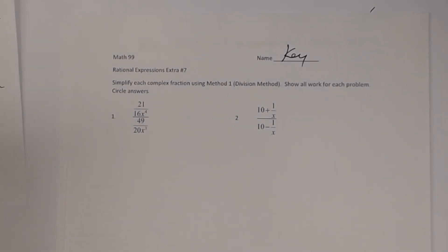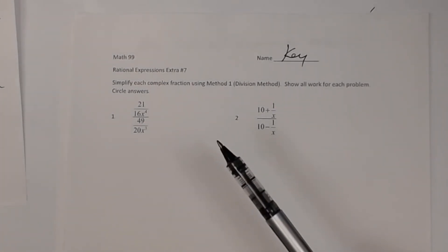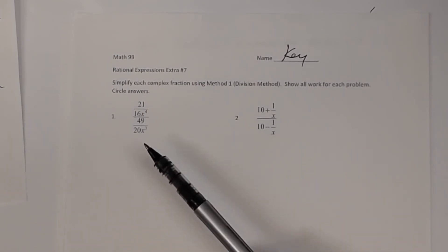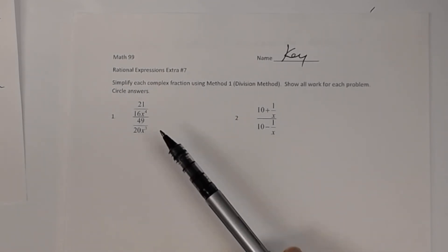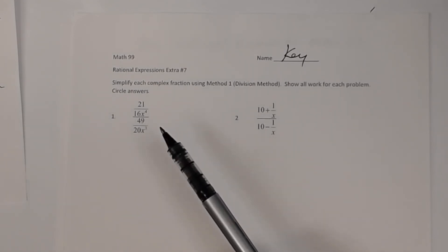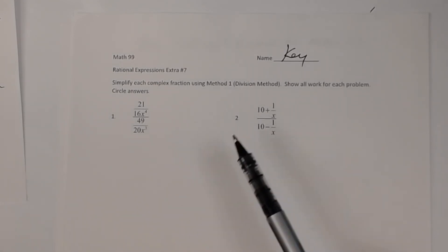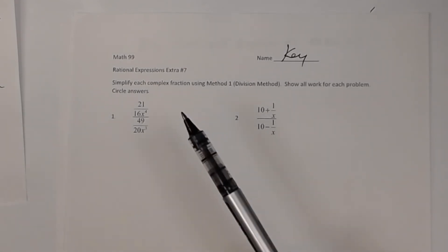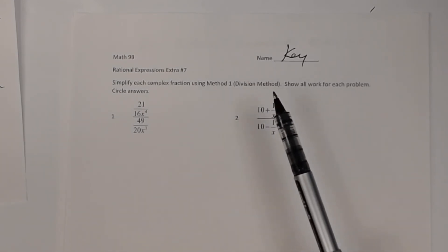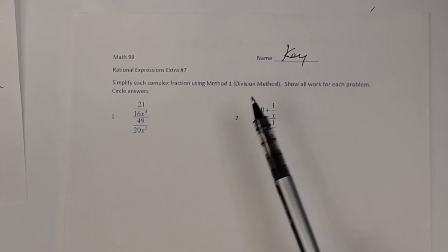This is a key to the worksheet on rational expressions, number seven — extra number seven. In these problems you're given complex fractions and you're asked to simplify each of them. There are four of them, and you're using method one, which we call the division method.